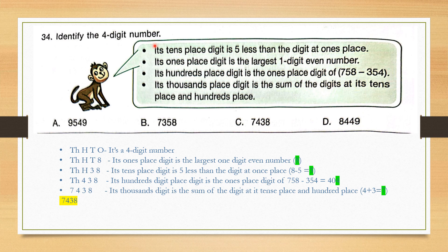Question number 34. Identify the 4-digit number. We can write down the thousands, hundreds, tens, and ones places. First statement: its tens place digit is 5 less than the digit at ones place — we cannot determine this yet. Next statement: its ones place digit is the largest 1-digit even number, which is 8. So we replace the ones digit with 8. Going back, 5 less than 8 is 3, so we replace the tens digit with 3.